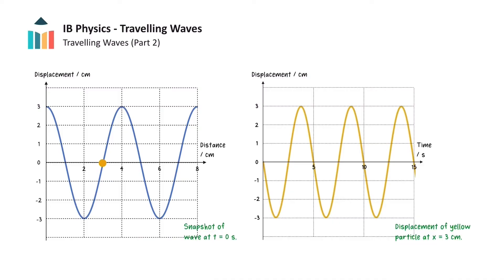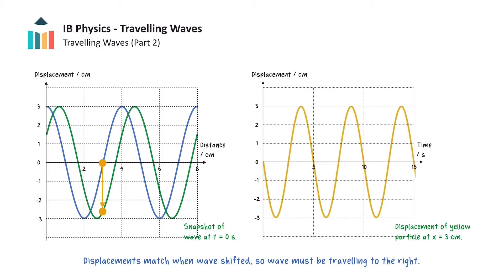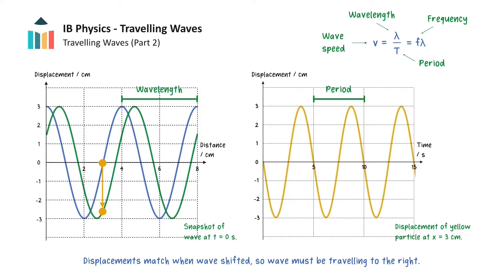We will now take a look at these two types of graphs side by side. Given both of these graphs, we can determine the direction that the wave is travelling. Starting from time 0 seconds, the displacement of the yellow particle is negative. If we locate the position of this particle on the displacement-distance graph and shift the wave slightly to the right, as shown by the green wave, we can see that the yellow particle has moved to a negative displacement, matching what is observed in the displacement time graph, so our wave must be travelling to the right. Recall also that wave speed equals wavelength divided by the period, or equivalently frequency multiplied by wavelength. Since wavelength and period can be determined from each of these graphs, we can use these values to calculate the speed of the wave. The wavelength of the wave is 4cm and the period is 5 seconds, so the speed of the wave is 0.8cm per second.